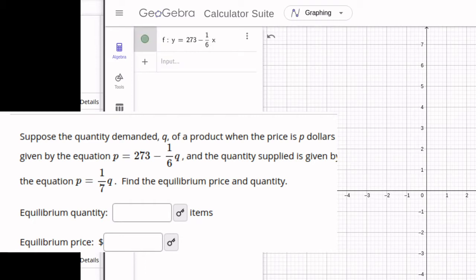That equation becomes y equals 273 minus 1 sixth x. Now we need to adjust this scale because the y-intercept is 273.